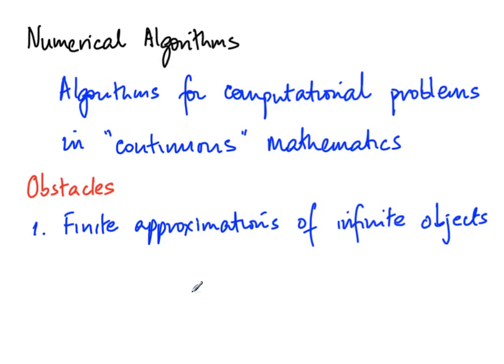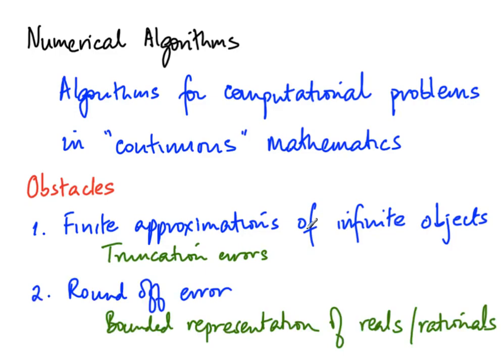So we have these finite approximations of infinite objects, and these give rise to what are called truncation errors — that is, we stop approximating at some point, so what we have is not the actual value. How much different is the computed value from the actual value? The other class of errors encountered in numerical algorithms are round-off errors, which arise from the fact that we cannot write down real numbers or even rational numbers precisely. We need a bounded representation, so the numbers used in computations are only approximations, and at every point the answers are slightly away from what they should be.